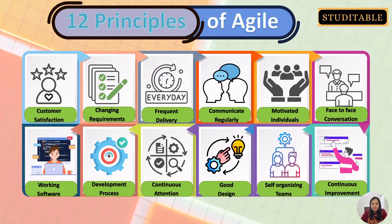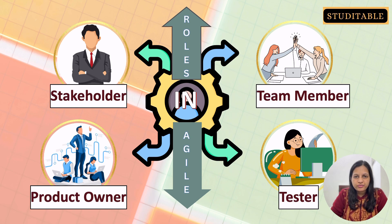Agile follows 12 principles, which are the building blocks of what Agile actually is. Any company claiming to be Agile must follow these: customer satisfaction, embracing changing requirements, frequent delivery with sprints running two to four weeks, regular communication keeping the client in the loop, motivated individuals, face-to-face conversation, working software, a continuous development process, continuous attention to good design, and self-organizing teams.